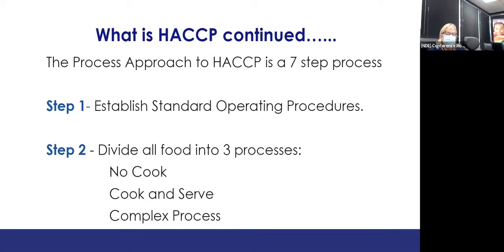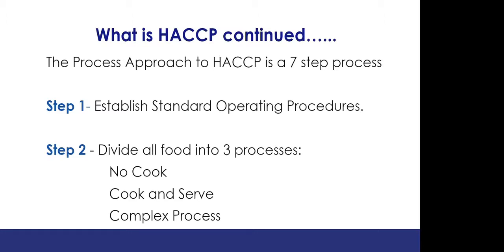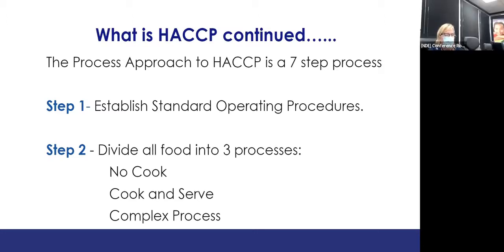HACCP is a process approach to food safety — not a reactive one. There are seven steps. Step one is establishing standard operating procedures. You should all have SOPs in your notebook, and we will go over those on August 13th. We should all have standard operating procedures based on the 2016 food code.